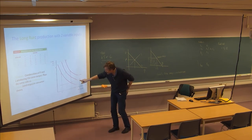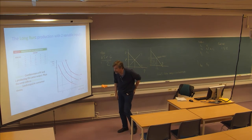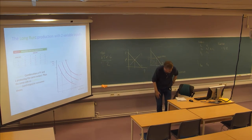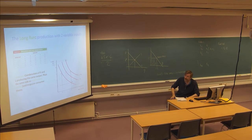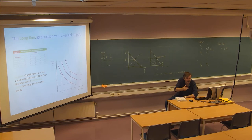Isoquants play the same role as indifference curves in consumer theory. The underlying data to the figure is shown in table 6.4. The idea is that we should solve optimization problems — just as we did in the previous chapter, we need this to find optimal choices of K and L. This is just preparation.